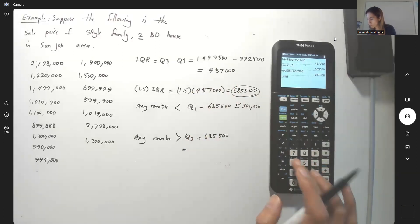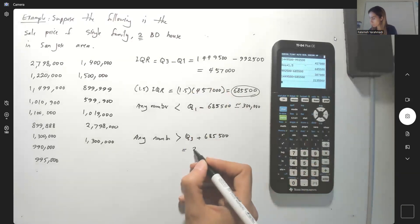1,449,500 plus 685,200, which is 2,135,000.